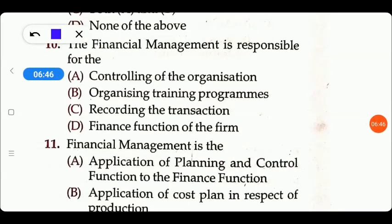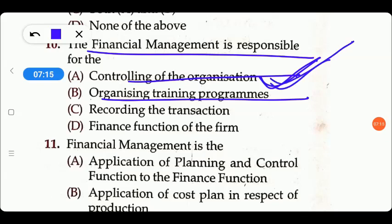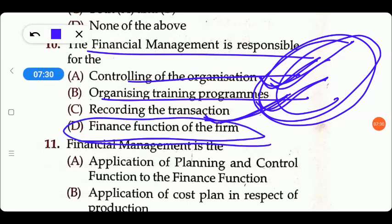Next question: the financial management is responsible for — controlling the organization, training performance, recording the transactions, or financial functions of the firm? Financial management is not the general management part; controlling the organization, organizing training, and recording transactions are management parts. The right answer is specifically the financial functions of the firm.